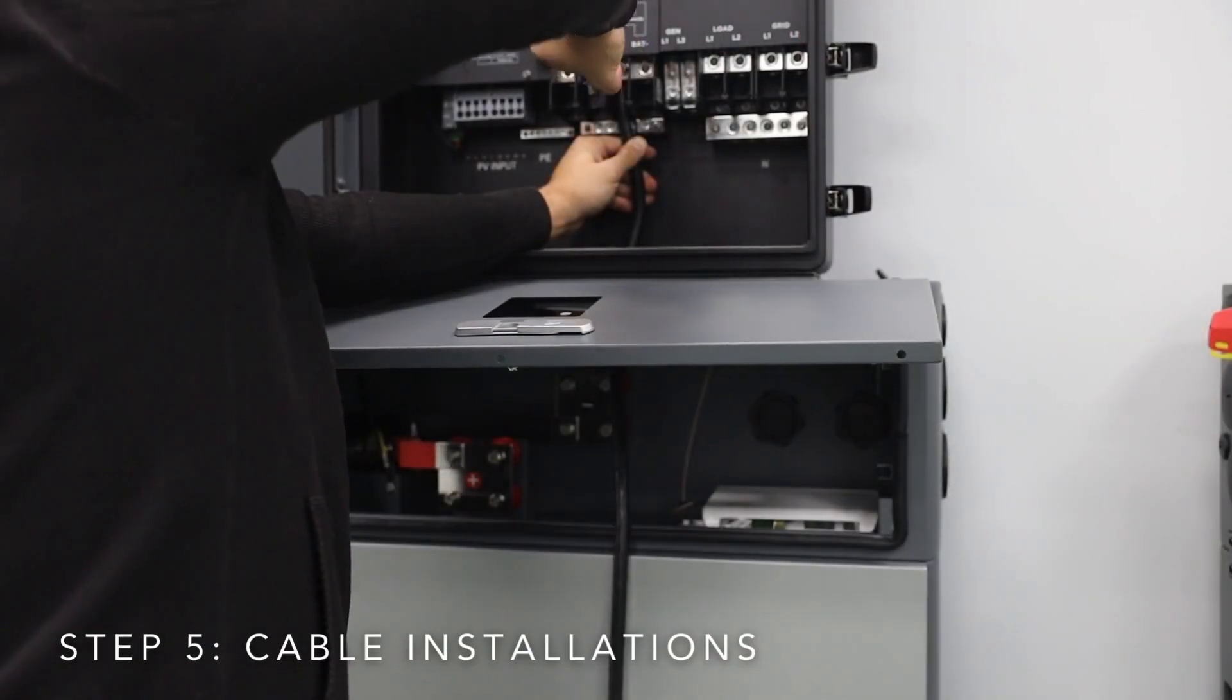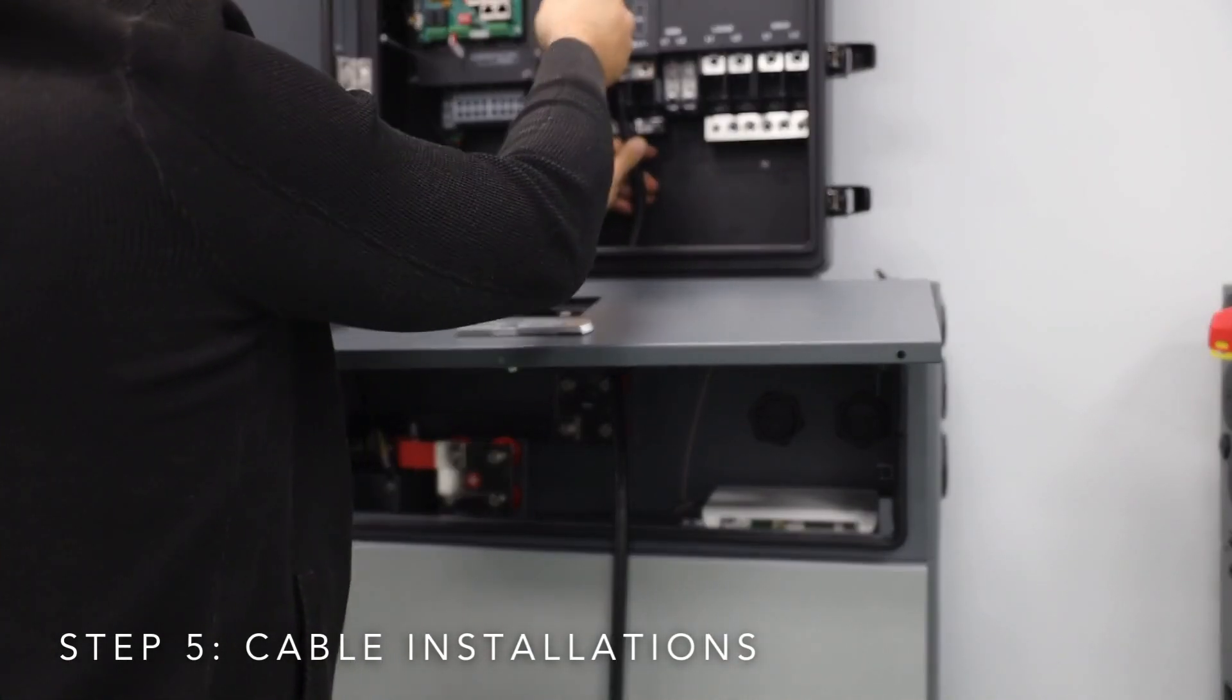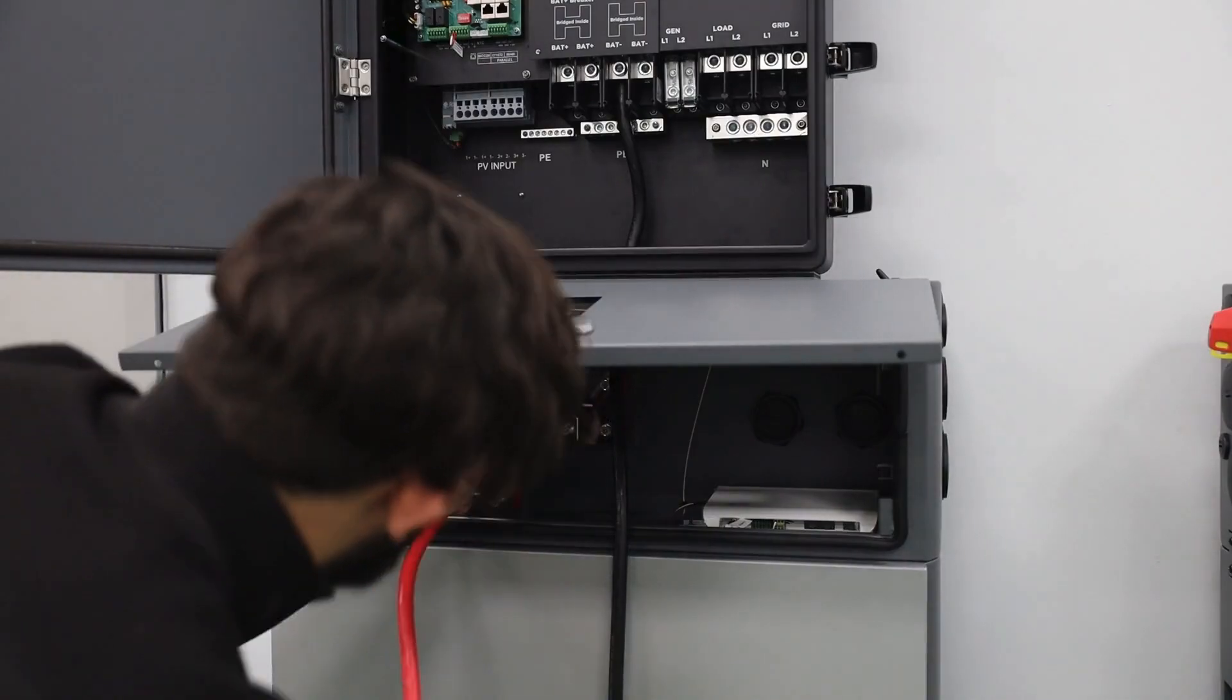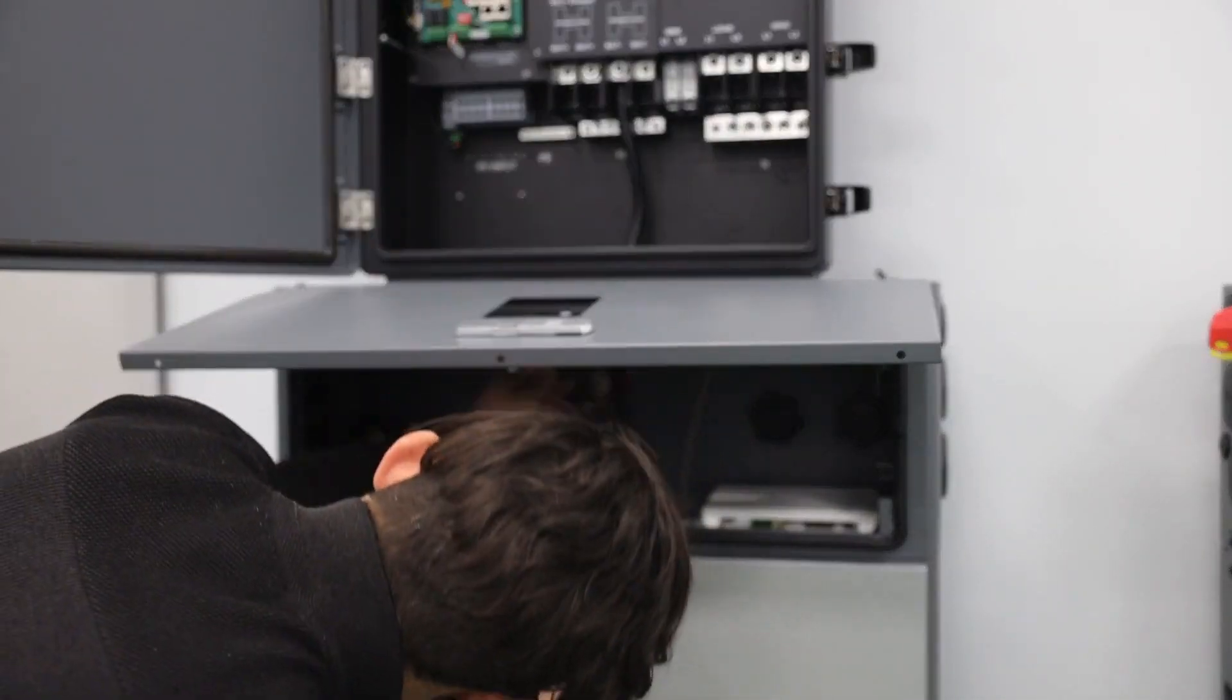Now, we'll connect the battery to the inverter system. Follow the wiring diagram in the manual and securely connect the positive and negative terminals, ensuring proper torque settings.